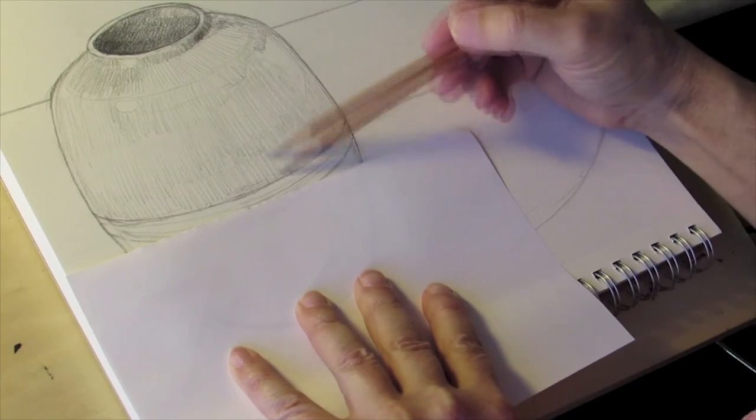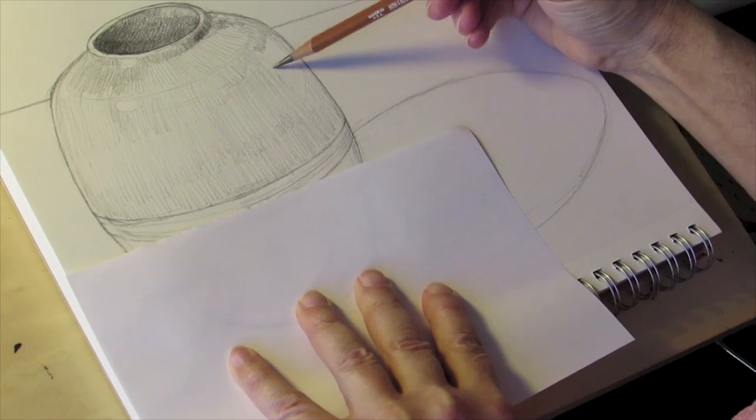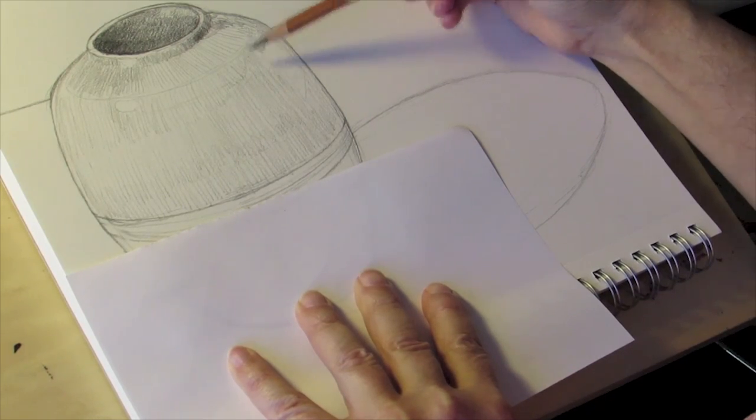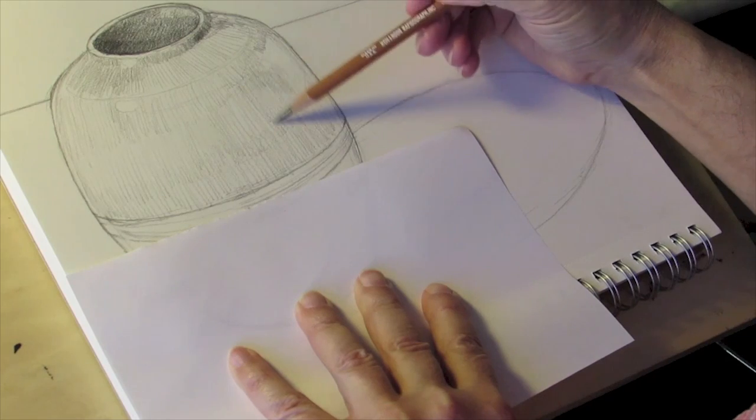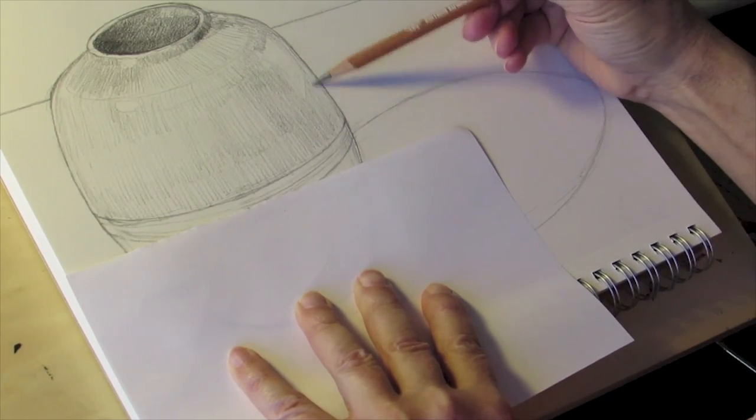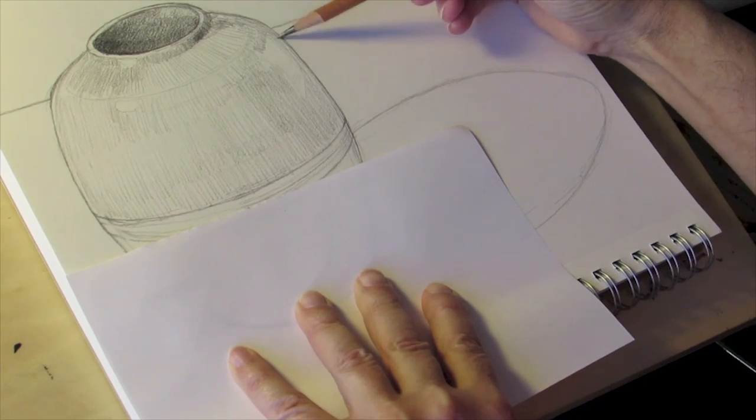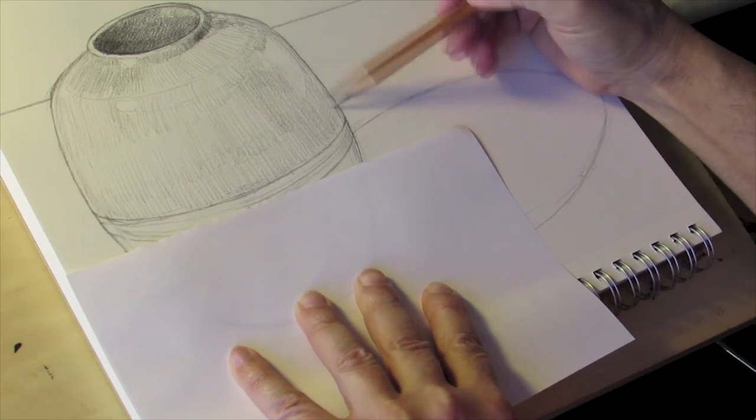If you remember back to my original demonstration of mark making, you'll notice that I'm using the first type of marks that I demonstrated. This is a very fast way to work with a pencil and it allows me to test my observations. If my observation turns out to be accurate, I can develop it up further as I've done up in the opening here.